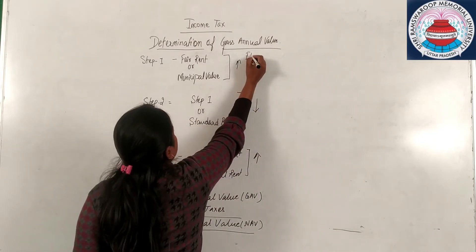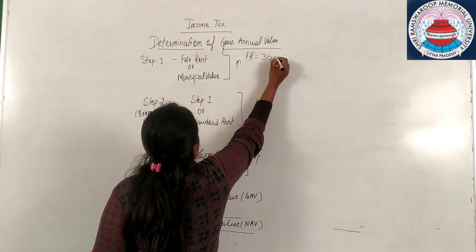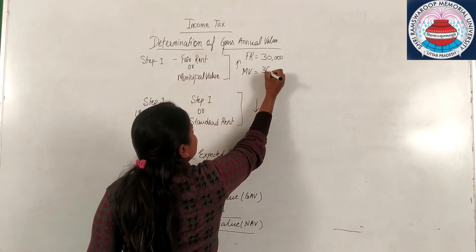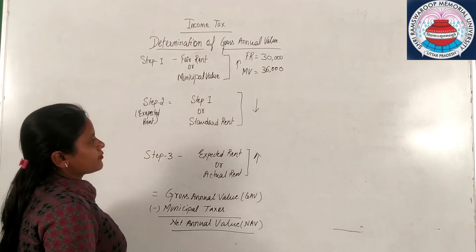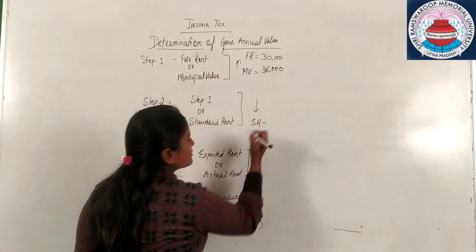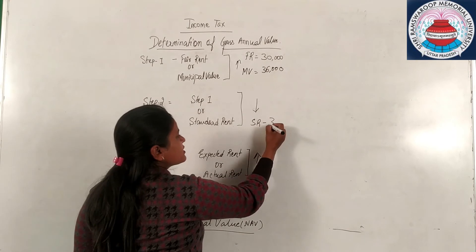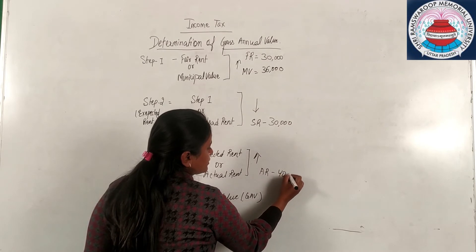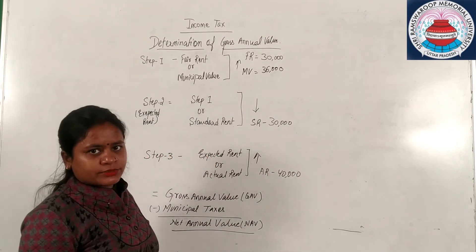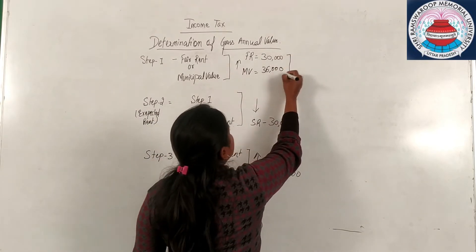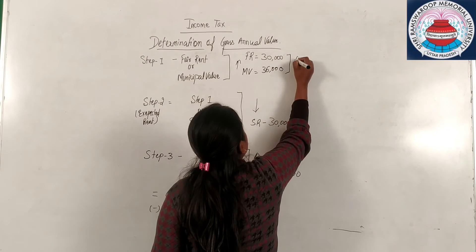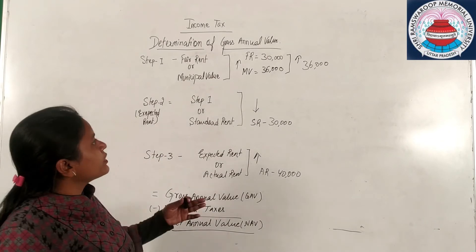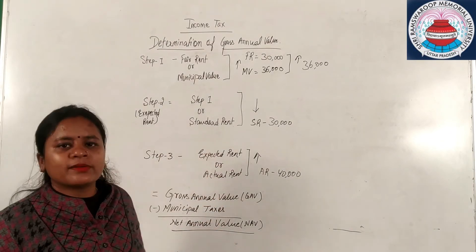Say FR that is fair rent is 30,000. Municipal value is 36,000. Standard rent is say again any figure 30,000. Actual rent is 40,000. Now we will do the computation part. FR 30,000 and MV 36,000 whichever is higher. So in step one answer will be 36,000 MV that is municipal value is higher than your FR fair rental value.